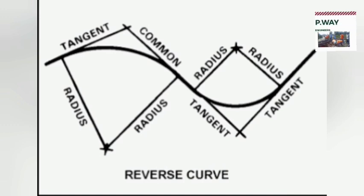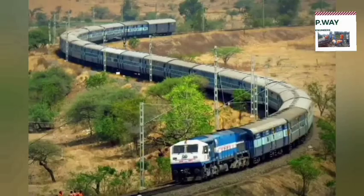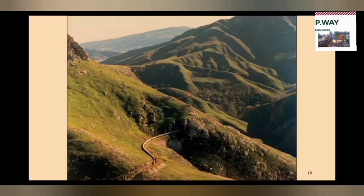The third type is the reverse curve. If a curve starts on the right-hand side, at the end of that right-hand curve a left-hand curve will be started. Between the two curves, a straight track may also be provided.